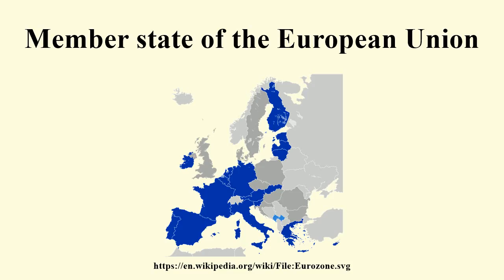Each state has representation in the institutions of the European Union. Full membership gives the government of a member state a seat in the Council of the European Union and European Council. When decisions are not being taken by consensus, votes are weighted so that a country with a greater population has more votes within the council than a smaller country. The presidency of the Council of the European Union rotates between each of the member states, allowing each state six months to help direct the agenda of the EU. Similarly, each state is assigned seats in Parliament according to their population.